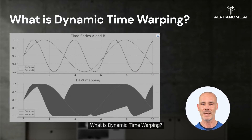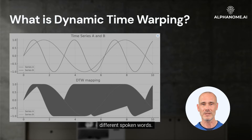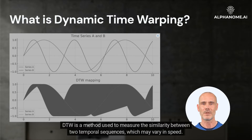Dynamic Time Warping is a technique originally developed in the field of speech recognition to align and compare different spoken words. It has since been applied in various fields, including finance. DTW is a method used to measure the similarity between two temporal sequences, which may vary in speed.